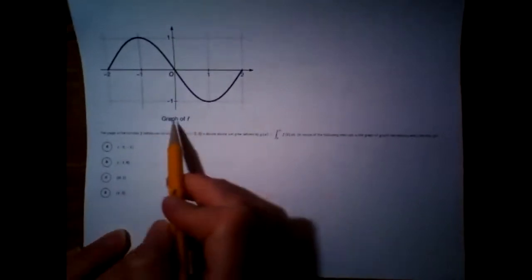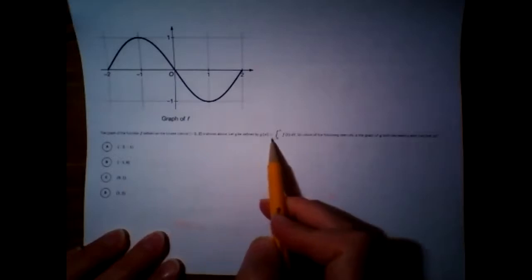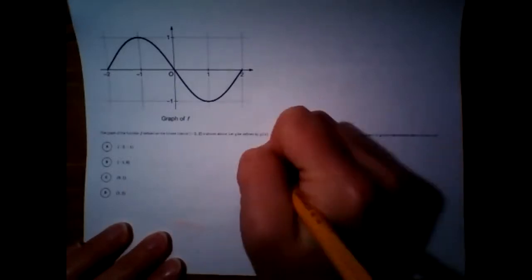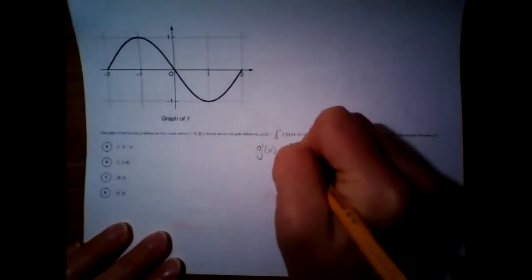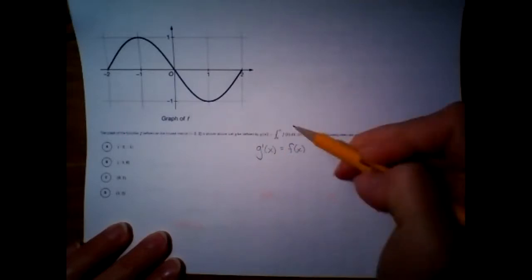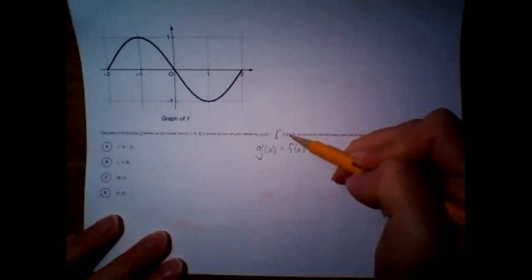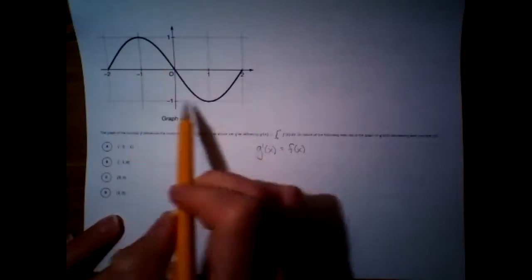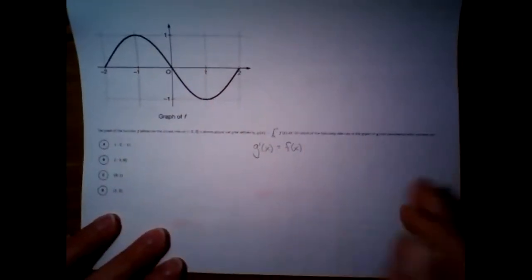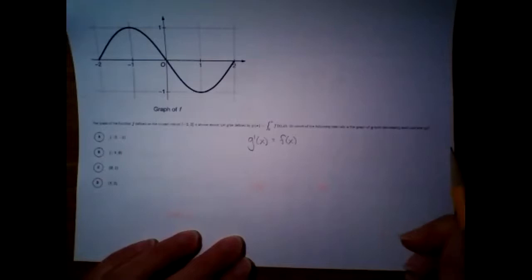Right here, we're given the graph of f and it says let g be defined by this integral. So, I'm going to go ahead and do the derivative of that. Derivative of an integral is going to cancel and that will just give me f of x. You're just going to plug x in. So, that means this is the graph of g prime. This is the derivative graph, which is typically what you're given. Are you guys getting used to that? Like they typically give you the derivative. Like they give you a rate function or rate graph.